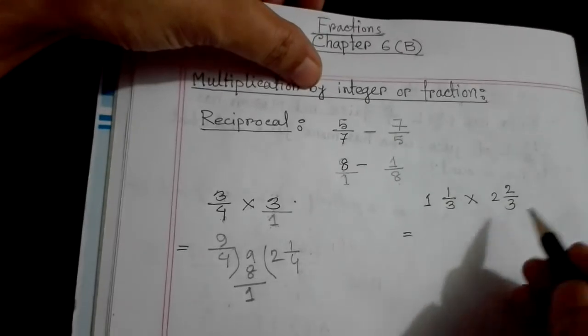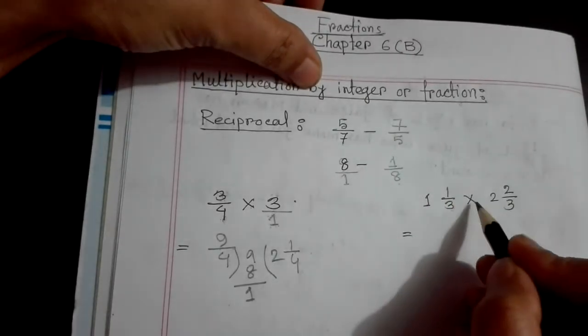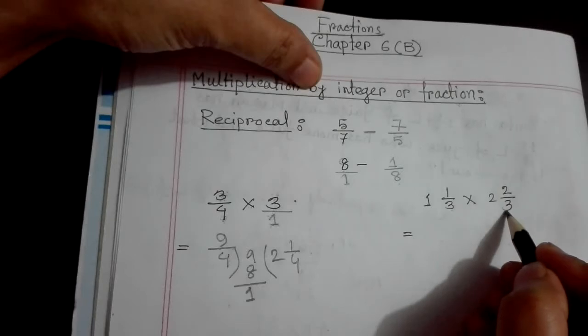Now look at another one. One whole one by three, multiply two whole two by three.